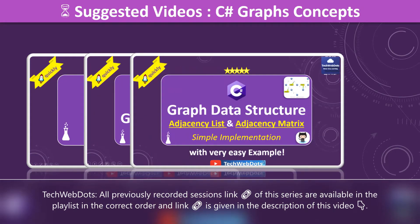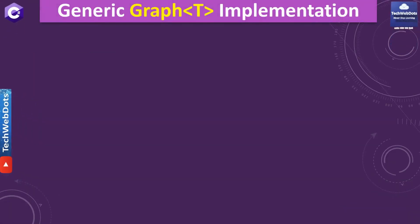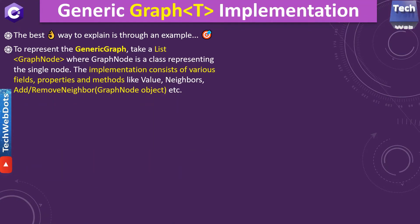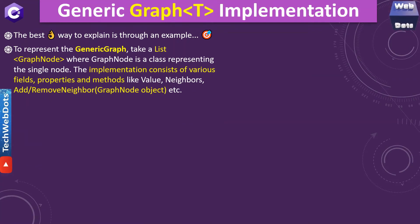Those previous videos cover graph representation in memory, adjacency lists, and adjacency matrices. Now, the generic graph implementation contains some very important points. The best way to explain is through an example, but let me discuss a few key points first. To represent a generic graph, we take a list of graph nodes where a graph node is a class representing a single node.